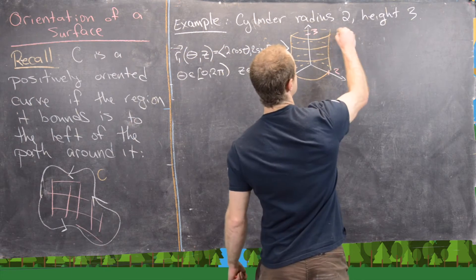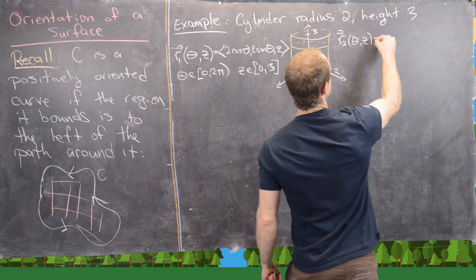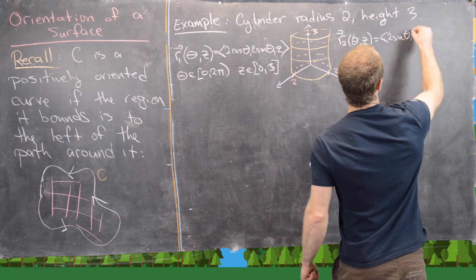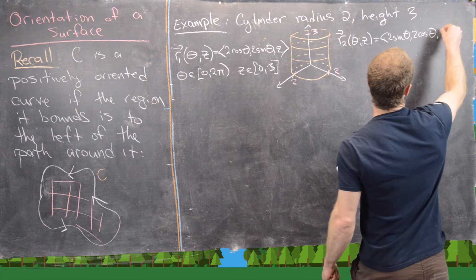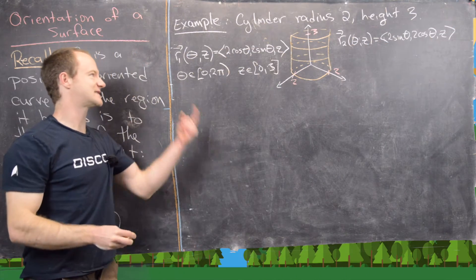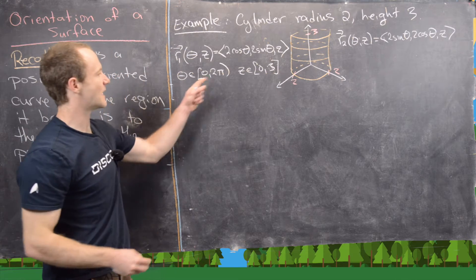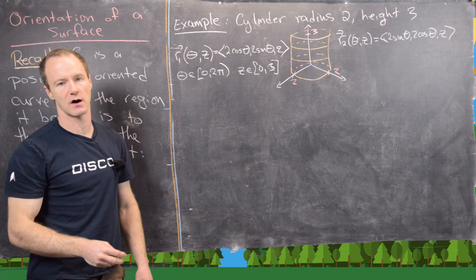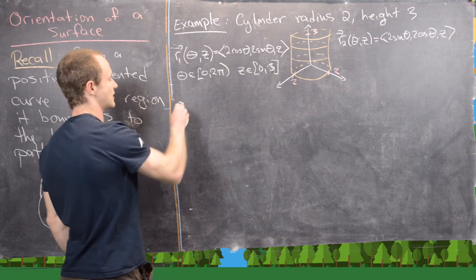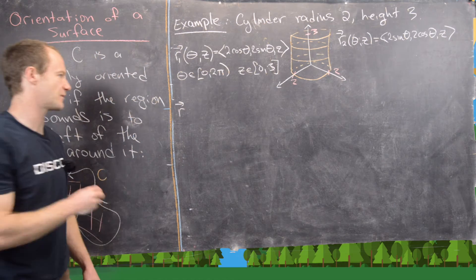So R2(theta, z) equals (2 sin theta, 2 cos theta, z) — I've just swapped the x and y coordinates. Notice that still draws this cylinder, just in another orientation. The theta and z ranges are the same. Now let's calculate the unit normal vector, which means we need to calculate R_theta cross R_z for R1.